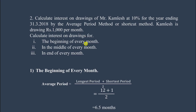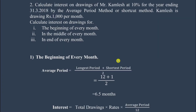It's a simple question but we need to calculate interest on drawings for three different situations: at the beginning of every month, in the middle of every month, and at the end of every month. Let's start with the first scenario — the beginning of every month.